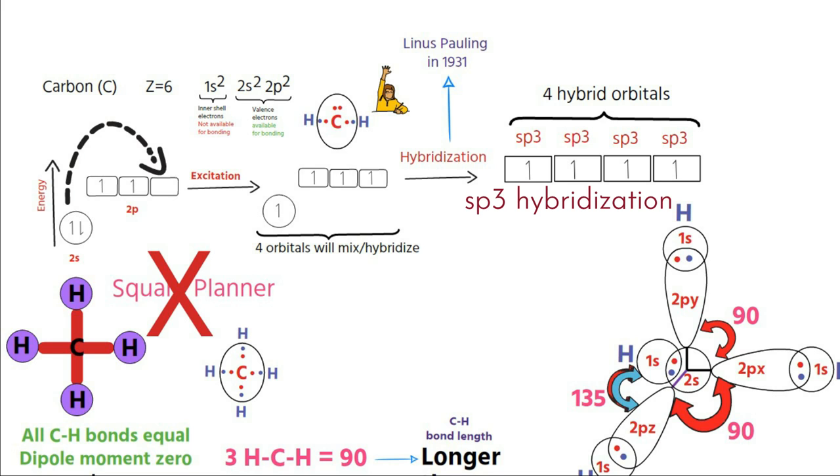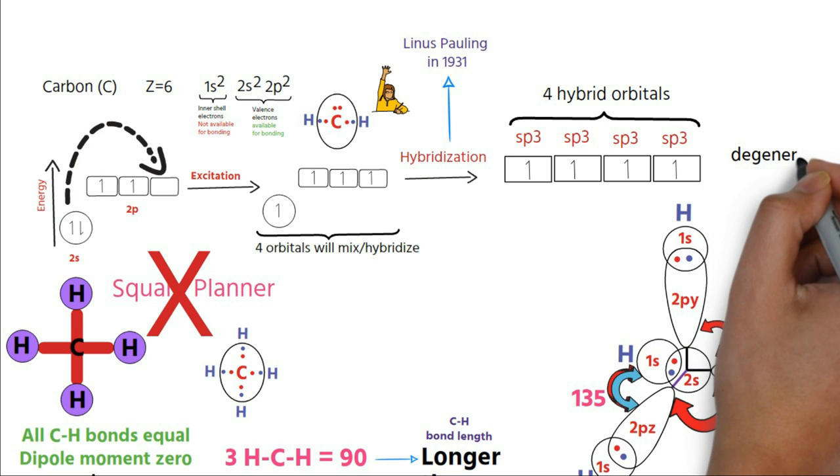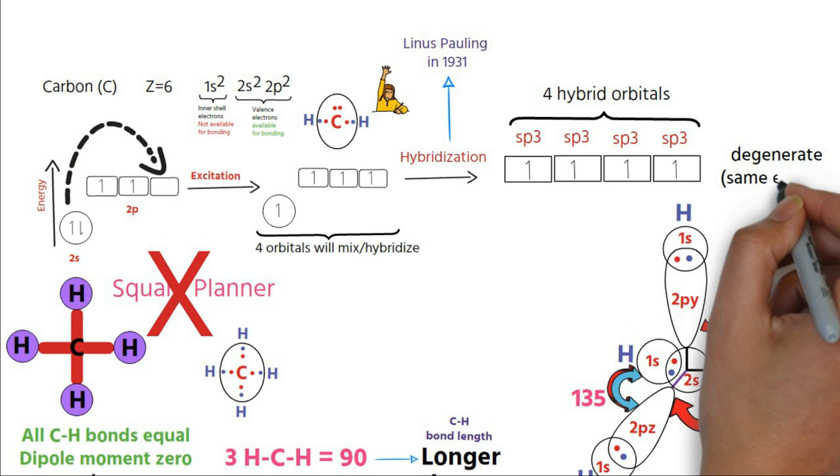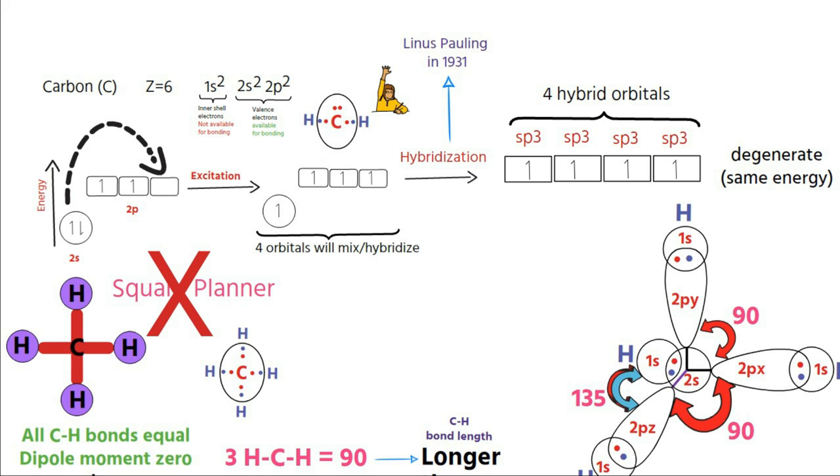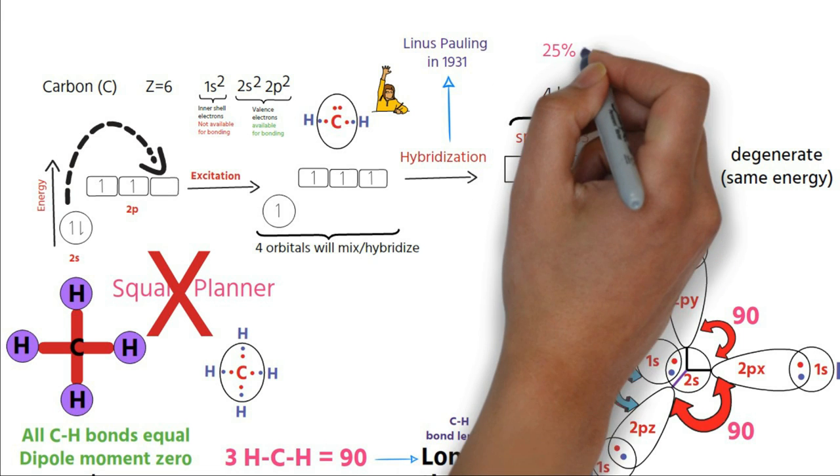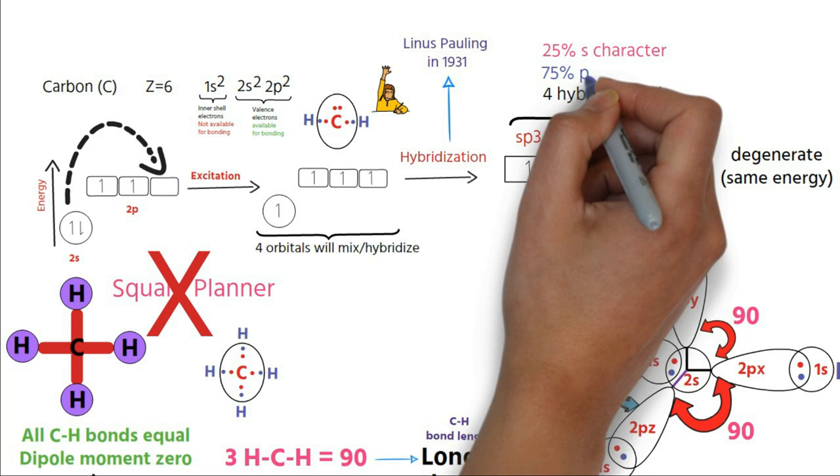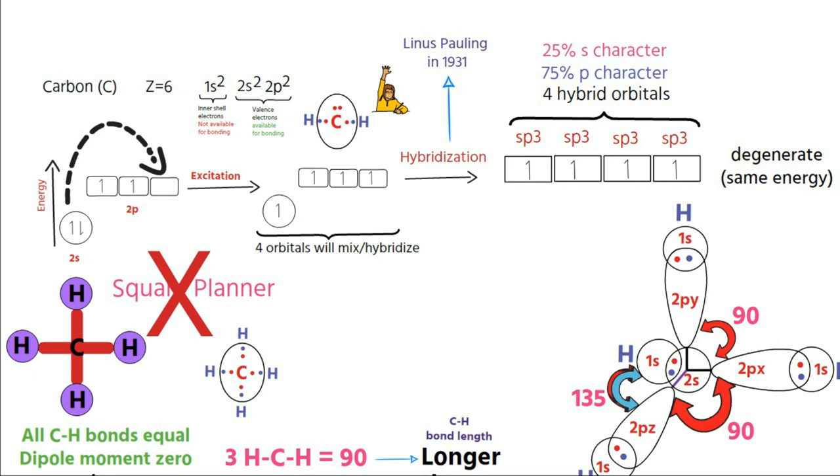The four sp3 hybrid orbitals are degenerate, that is have same energy, and each orbital has one part s, 25% s character, and three parts p, 75% p character. Now the question here remains, is the excitation of electron from 2s to 2p energetically feasible?